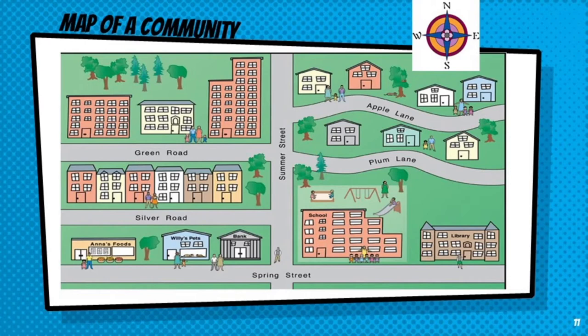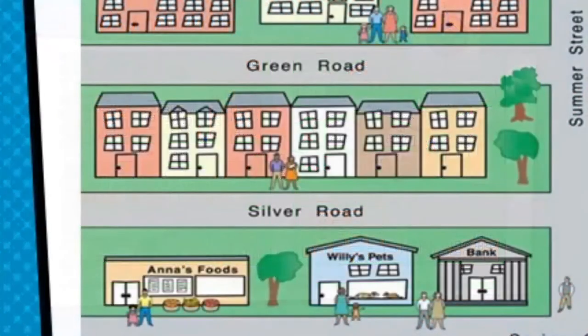Now we're going to help a family find where they're going. Malia and her dad are standing in front of Anna's Foods. She wants to go to the bank. In which direction would you send them? Look at the compass rose. You are right — they should go to the east. Very good!